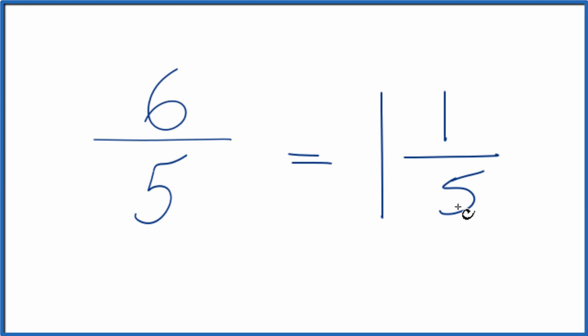You can check that. 1 times 5, that's 5 plus 1 is 6. That's where we get the 6 from. And the 5, that's just brought across.